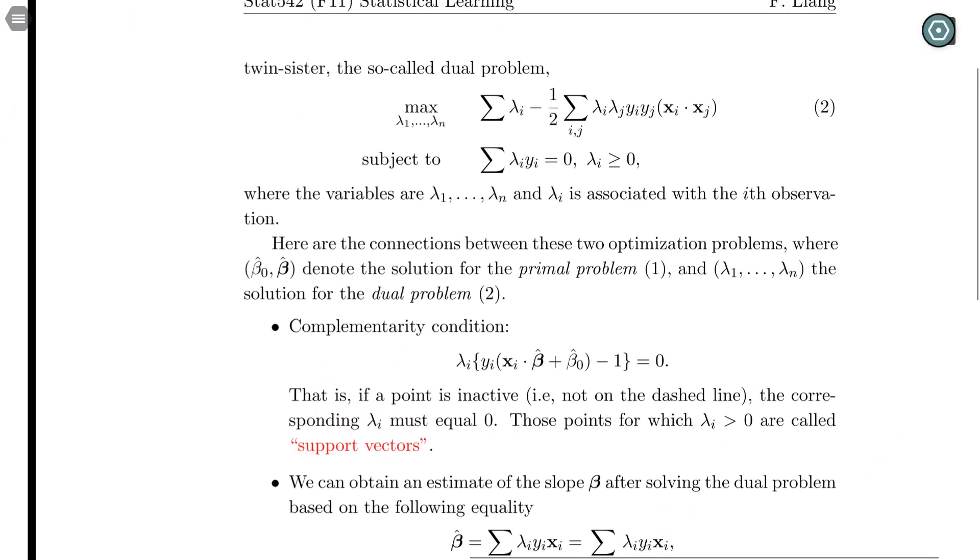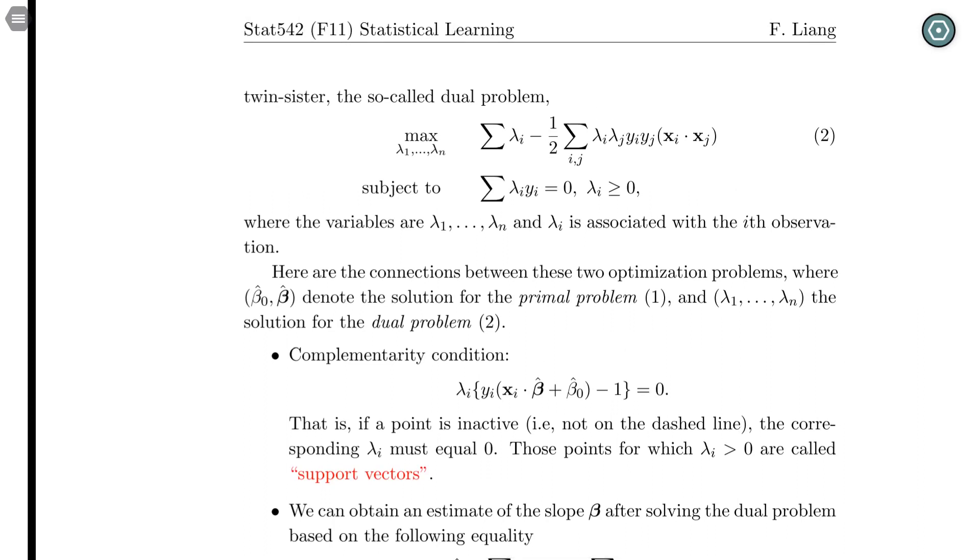And the dual problem arguments are lambda_1 through lambda_n. They are the Lagrangian multipliers for the original constraint because we have a constraint for each of the samples, so we have a Lagrangian multiplier.